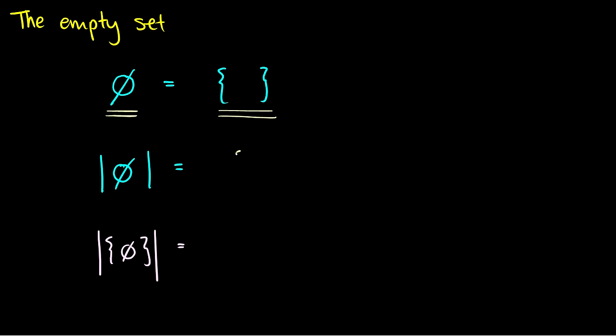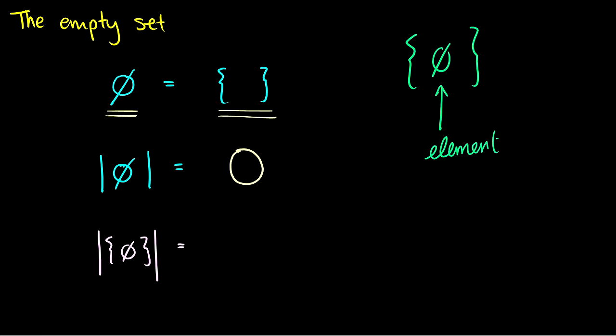There's only one set that has a size of zero, and that is the empty set. Here's a question — and this trips people up all the time. What is the size of the set containing the empty set? Well, the empty set is an element of the larger set. So the size of the set containing the empty set is one, because that big set has one element — it has the empty set as an element. So sets can have sets as elements.